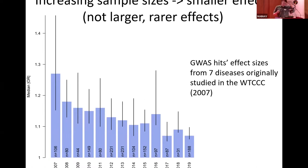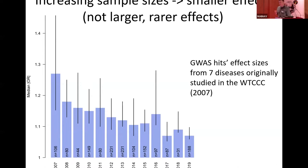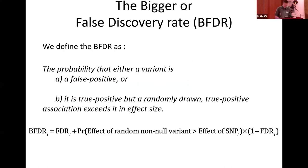Increasing sample sizes isn't really helping us in this respect. There might be some large effect variants hidden in the data, but they're a very small number compared to all the common variants. We're getting swamped with more common variants and not finding many low-frequency variants of large effect. With this in mind, we developed a method for selecting GWAS hits using effect size and significance.